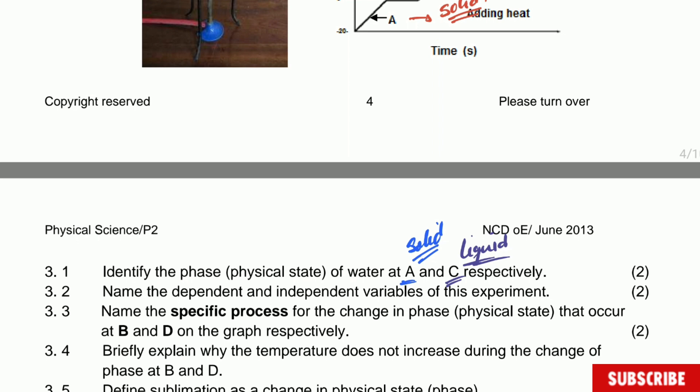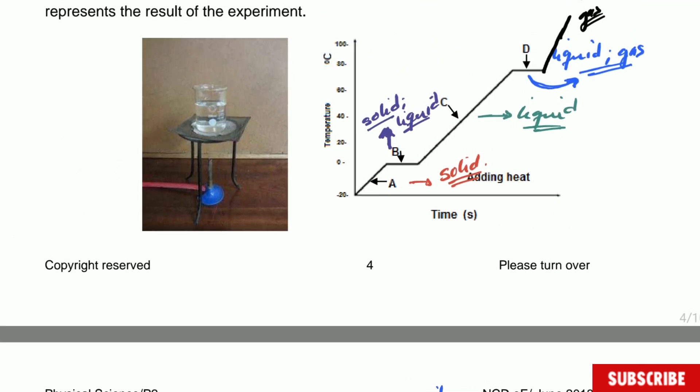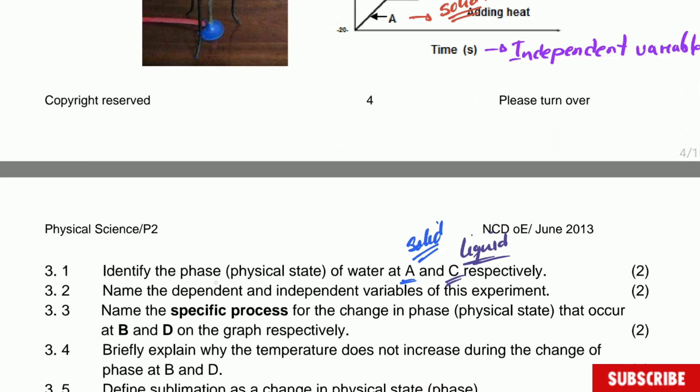Now name the dependent and independent variable of this experiment. Very important to do that. If you go to the graph, you need to remember that the variable that is going to be in the x-axis generally is going to be the independent variable, and what is going to be on the y-axis is going to be the dependent variable. So going back here, the dependent variable is going to be the temperature, and the independent variable is going to be the time. We are using only the graph to answer that question.